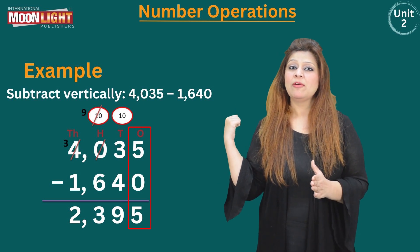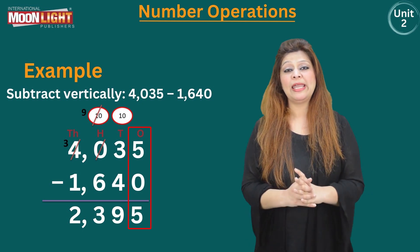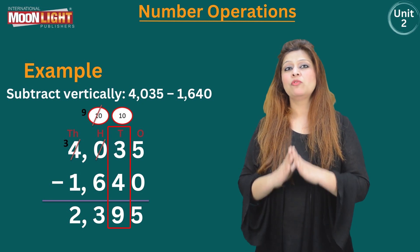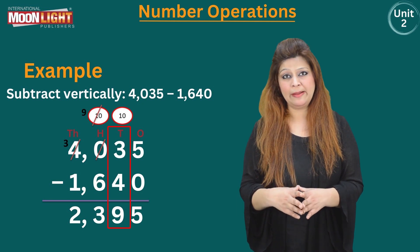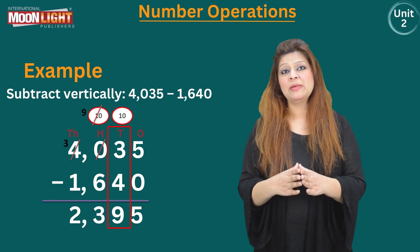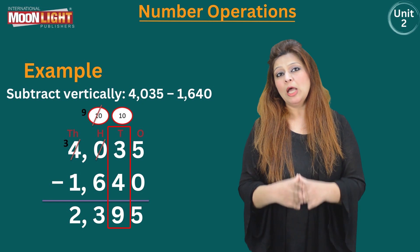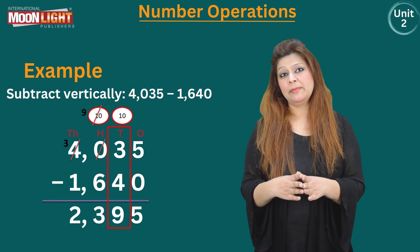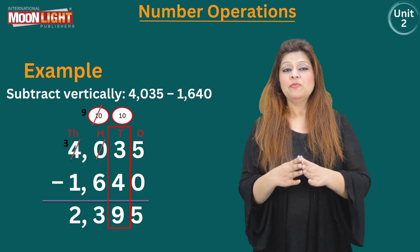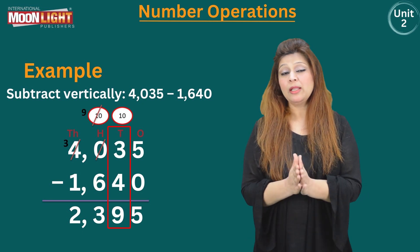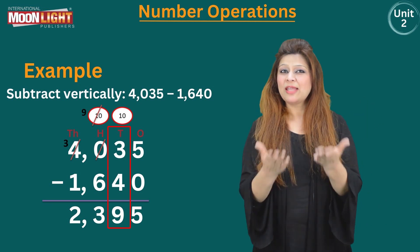5 minus 0 is 5. Now at the tens place, 3 minus 4 is not possible because for subtraction the first number must be greater than or equal to the second number. Since 3 is less than 4, we need to take a borrow from the neighboring number at the hundreds place. But there is a 0 there, so we cannot take a carry from it. We must knock on the second door — the thousands place.